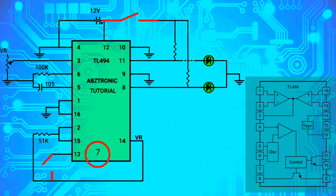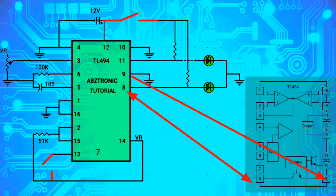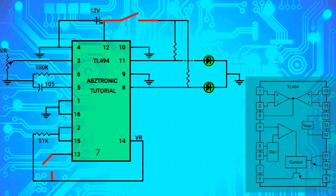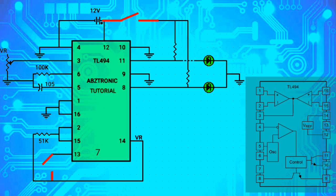Pin 7 is the ground. Pin 8 is the collector and pin 9 is the emitter of transistor 1 from the internal circuit. Either the collector or the emitter can be used as the output, depending on the circuit design.